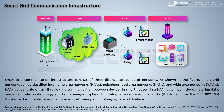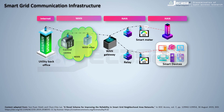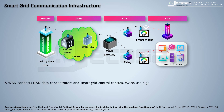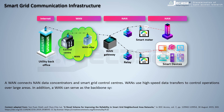ZigBee-based WSNs are suited for improving energy efficiency and prolonging network lifetime. A WAN connects NAN data concentrators and smart grid control centers, using high-speed data transfers to control operations over large areas.